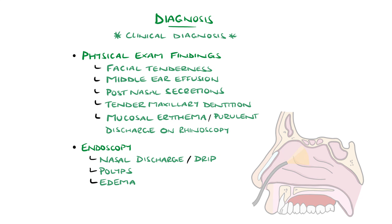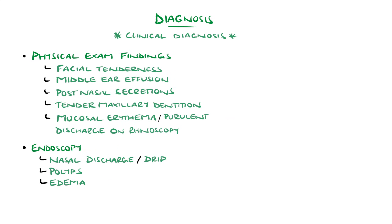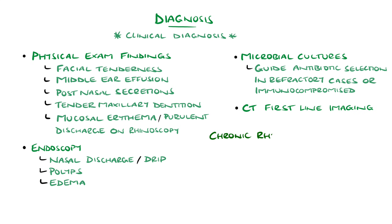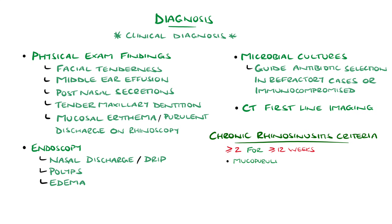Lab investigations are not typically used; however, lab cultures can help with antibiotic selection, especially in those who are refractory to empirical treatment or are immunocompromised. If complications are suspected, CT imaging is the modality of choice. The American Academy of Otolaryngology criteria feature 12 weeks or more of at least two of the following: mucopurulent discharge, nasal obstruction or congestion, facial pain or pressure, and hyposmia.